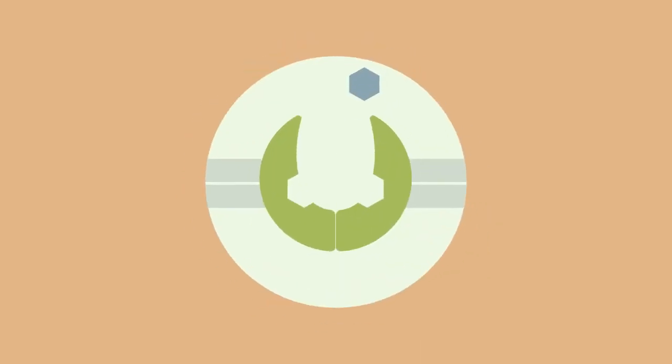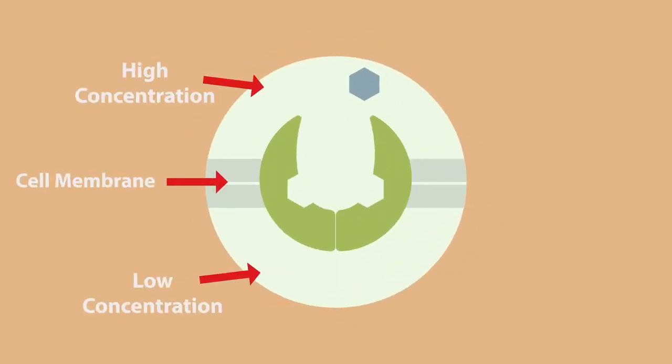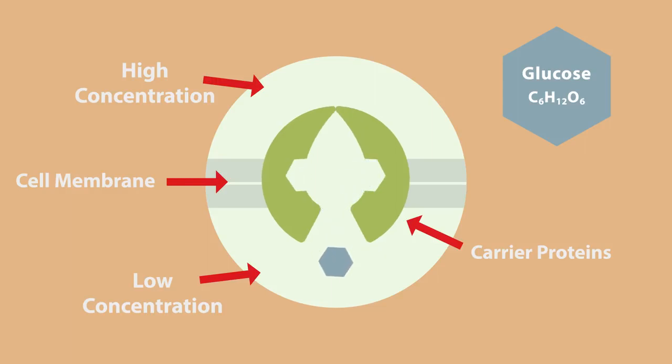You can also have facilitated diffusion where the movement is still down the concentration gradient, but special carrier proteins are required to enable the movement. Glucose and ions need carrier proteins to move across the membrane.